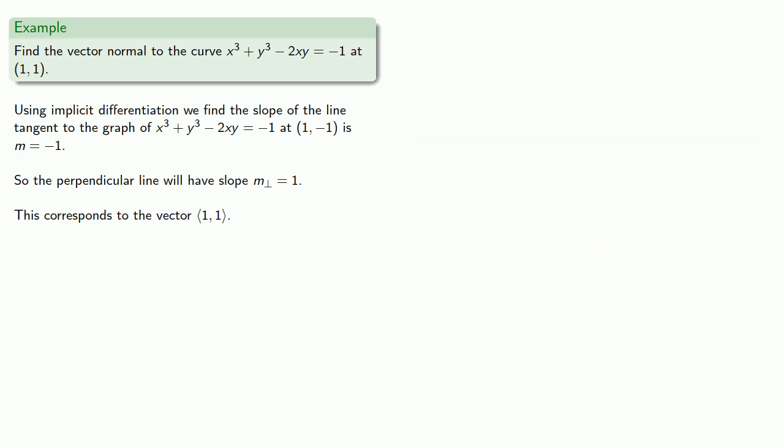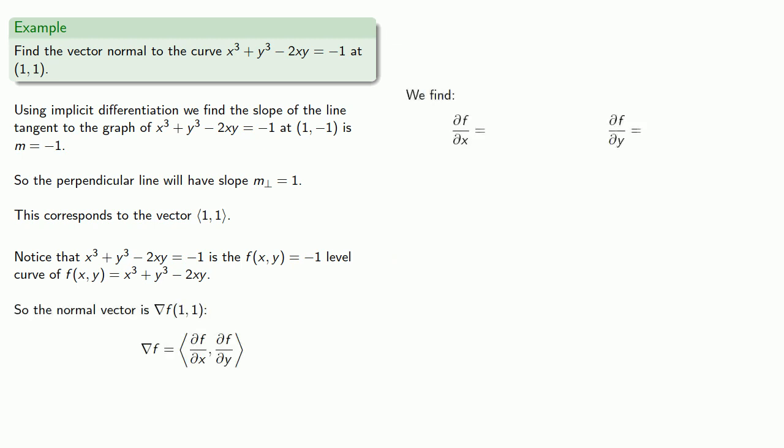Now, we can also use the gradient. So, notice that our curve is the f(x,y) equals negative one level curve of our function x cubed plus y cubed minus 2xy. And so we can find the normal vector by finding the partial derivatives. And we get the same answer as before for the vector normal to the curve.